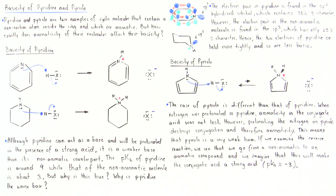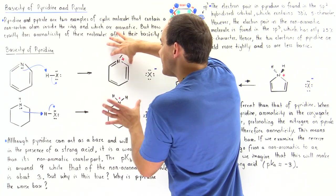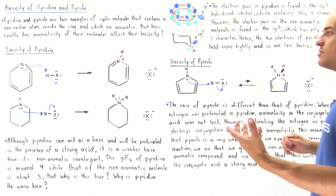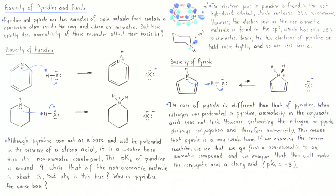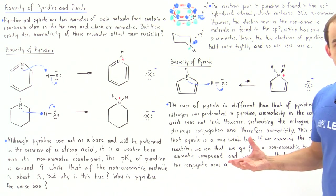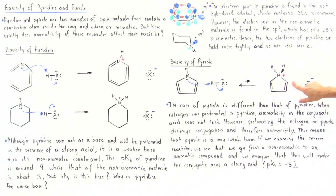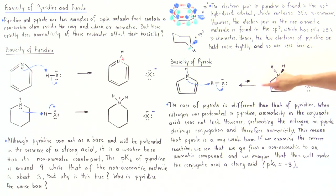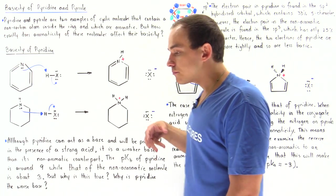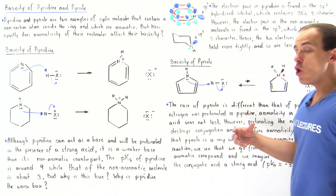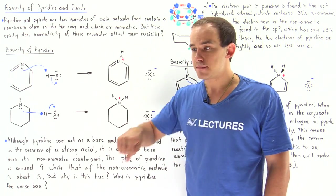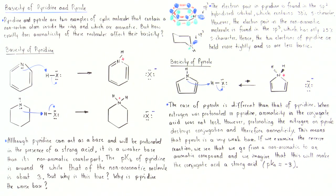The case of pyrrole is different from pyridine. When nitrogen was protonated in pyridine, aromaticity in the conjugate acid was not lost — it remained conjugated and aromatic. However, protonating the nitrogen on pyrrole destroys conjugation and therefore destroys aromaticity. Notice that all the orbitals on the nitrogen are now used up and the electron density cannot circulate around all the atoms, so aromaticity is lost.